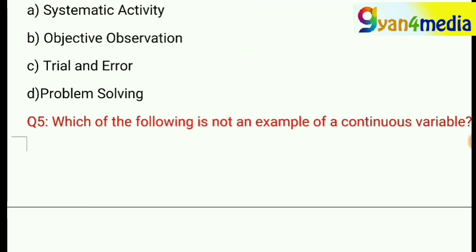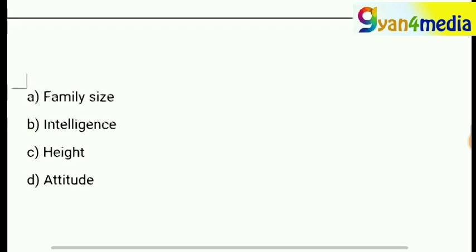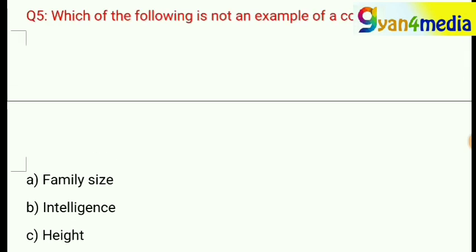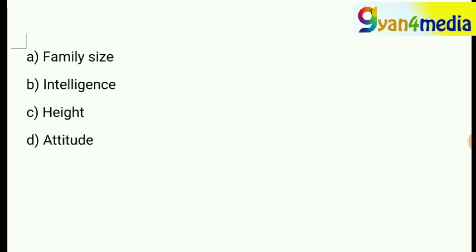Which of the following is not an example of a continuous variable? Options given are: A, family size; B, intelligence; C, height; or D, attitude. The question asks which is NOT an example of a continuous variable, and the correct answer is option B — intelligence.